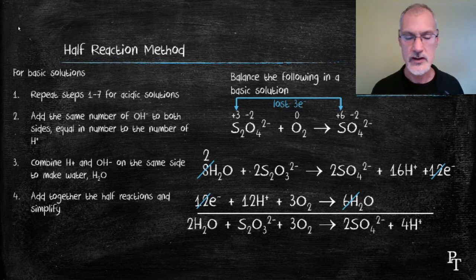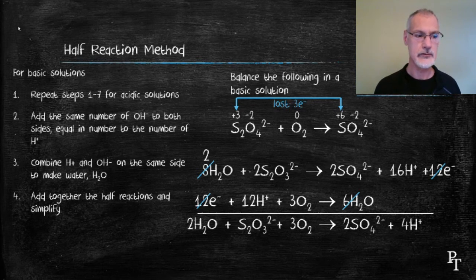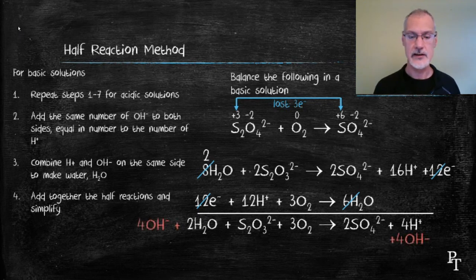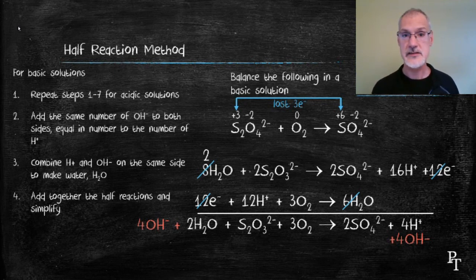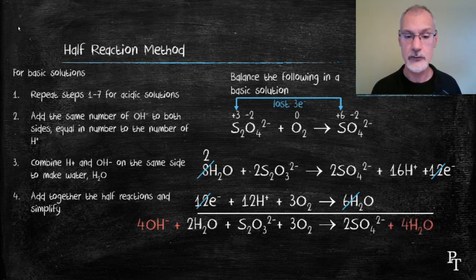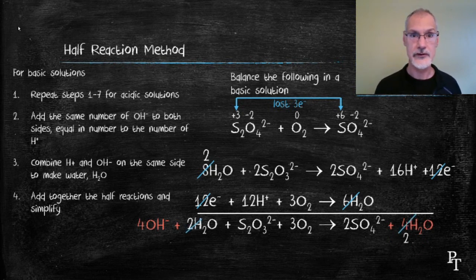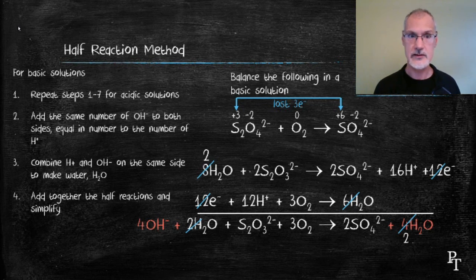Now we're at the situation where we introduce the additional steps for a basic solution. I notice the presence of four acid particles on the right-hand side, so I'm going to add four base particles (OH⁻) to both sides of the equation, shown here in red. The acid particle and the base particle combine to make a water molecule, so in this case four water molecules take their place. I can then cancel out the water molecules on both sides and simplify them. I've now reached a balanced chemical equation in a basic solution — it's just a slight modification from the method used for an acid.